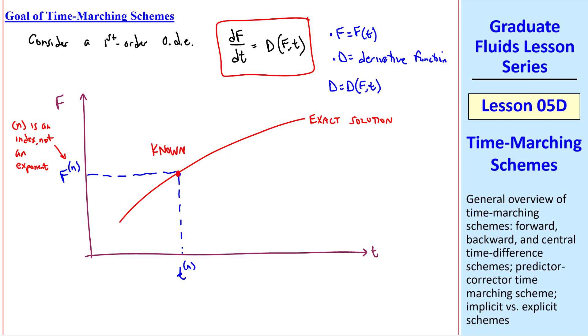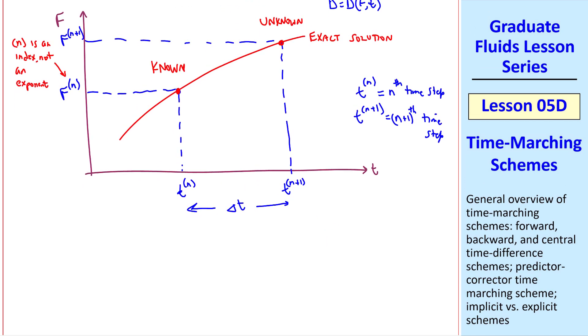This point is known, and we want to predict f at the next time step, which we'll call tn plus 1. This point is unknown, and it's what we're trying to predict, namely fn plus 1. This time difference we'll call delta t. In our notation, tn is the nth time step. tn plus 1 is the n plus 1th time step. f of n is the value of f at tn. And fn plus 1 is the value of f at tn plus 1.